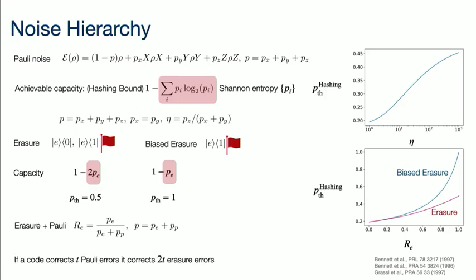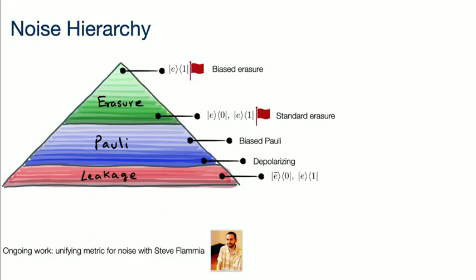Another nice thing about erasure errors: comparing the plots, the thresholds for biased erasures are really high. In general, for erasures, another nice property is that if your code can correct for some number of Pauli errors, it can correct for twice as many erasure errors. So again, an erasure noise channel is more desirable. My request to all the experimentalists is: when you describe your noisy qubit to me, don't tell me just one number — fidelity or infidelity. Give me some more information about what the type of your noise is.